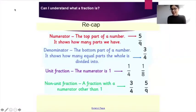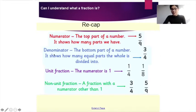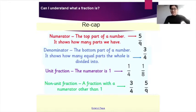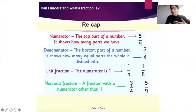Let's have a little bit of a recap on our fraction knowledge. The numerator is the top part of a number and it shows how many parts we have. Then we have the denominator — that is the bottom part of a number and it shows how many equal parts the whole is divided into. A unit fraction is when the numerator is one. A non-unit fraction is a fraction with a numerator other than one, such as three or maybe even five.